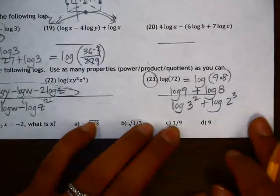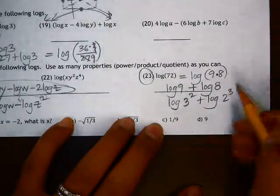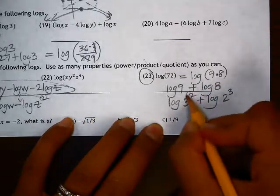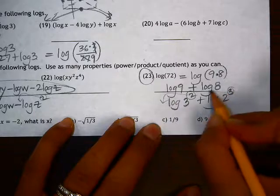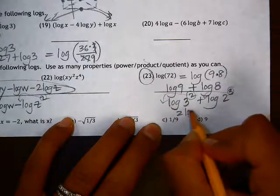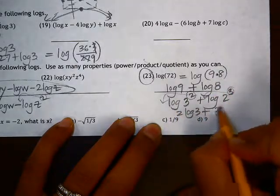So if we used as many properties as we could, we could do that and then change it to using the power property moving the exponents down. This could be equal to 2 times log 3 plus 3 times log 2.